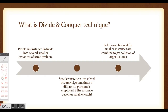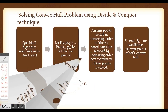The divide and conquer technique consists of three steps. First, the problem instance is divided into several smaller instances of the same problem. Second, the smaller instances are solved recursively, and sometimes a different algorithm may be employed if the instance becomes small enough. Third, the solutions obtained for the smaller instances are combined to get the solution of the larger instance, ultimately solving the original problem.